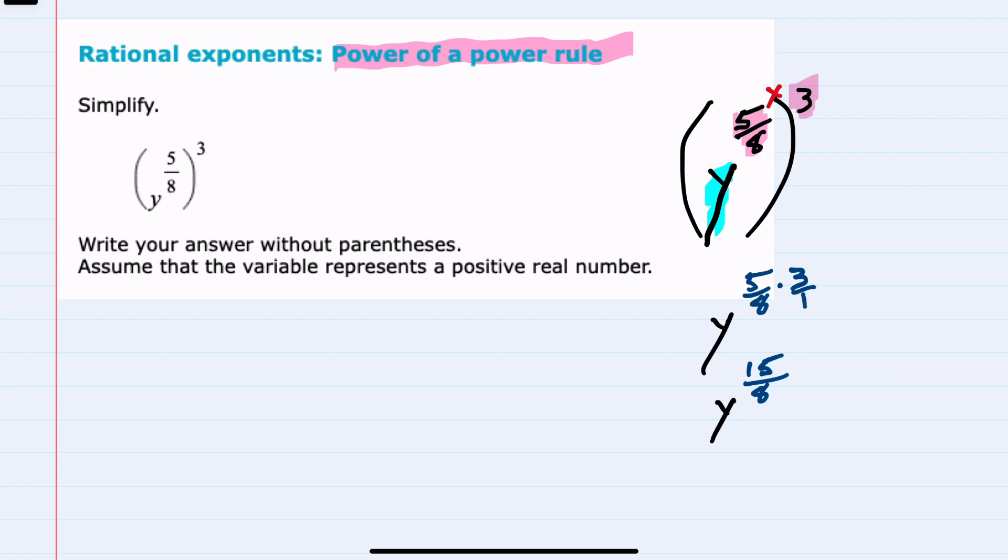We have an exponent of 15 eighths that doesn't simplify. So we have written the expression without parentheses, and y to the 15 eighths is our most simplified expression.